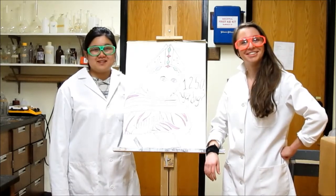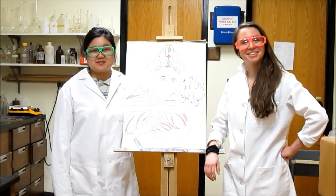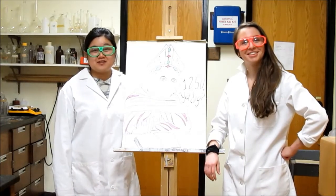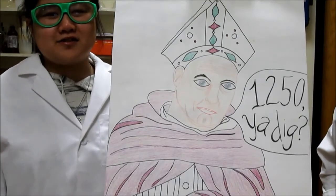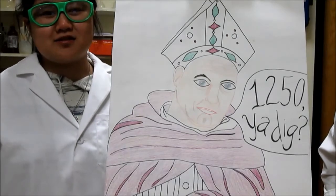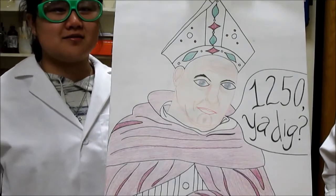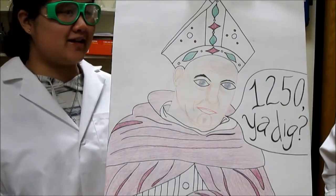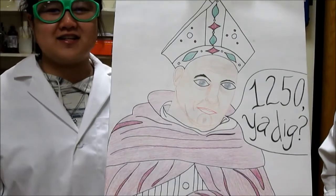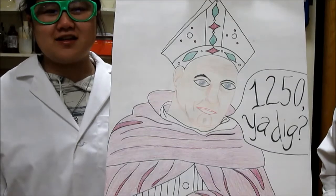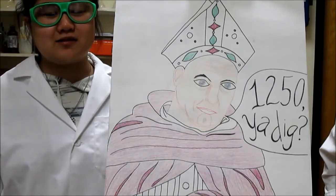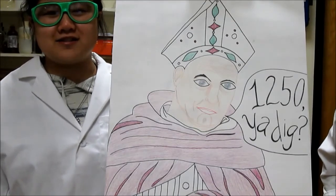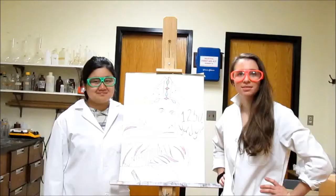Arsenic compounds have been used throughout history as early as 300 AD. Elemental arsenic, however, was first isolated during the Bronze Age by famed alchemist Albertus Magnus in 1250. It is thought that he first isolated the element by heating soap together with arsenic sulfide.